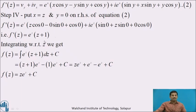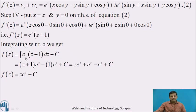We have obtained the right-hand side as a simple function of z. Integrating with respect to z to get f(z): the integral of f'(z) = f(z) equals the integral of e^z·(z + 1) dz + C. Since this is a product of two functions of z, we use the generalized rule of integration, taking z + 1 as the first function and e^z as the second. This gives (z + 1)·e^z minus the integral of 1·e^z dz, yielding (z + 1)·e^z - e^z + C. After simplifying, f(z) = z·e^z + C. This is the required analytic function.